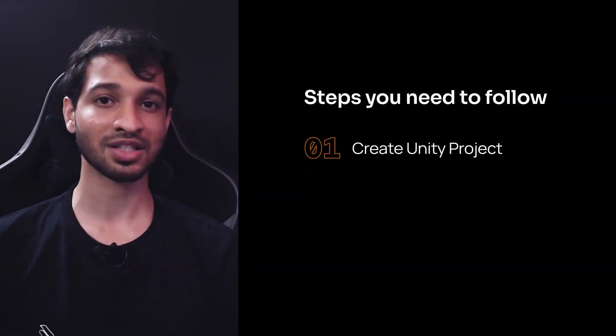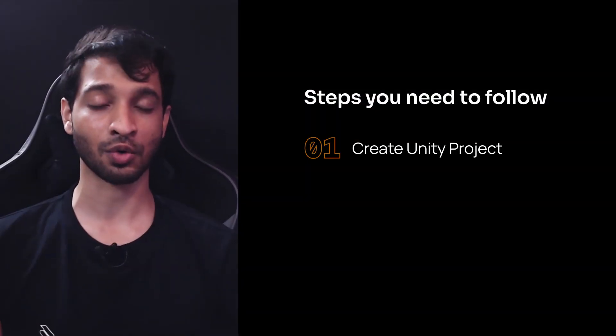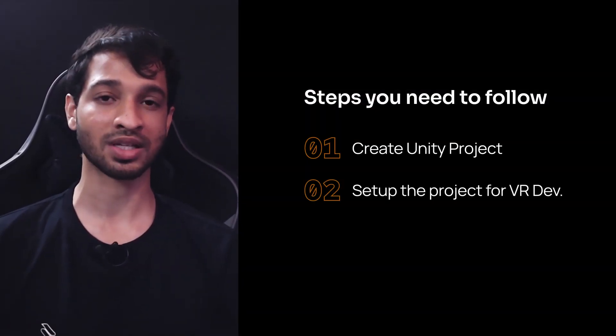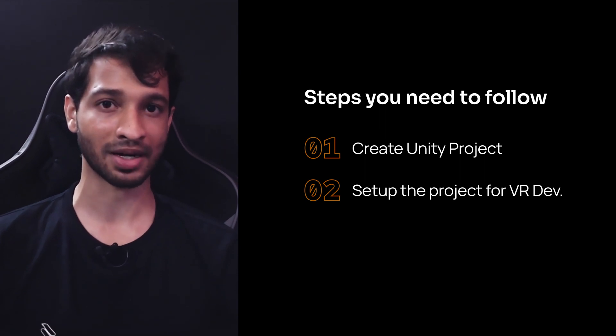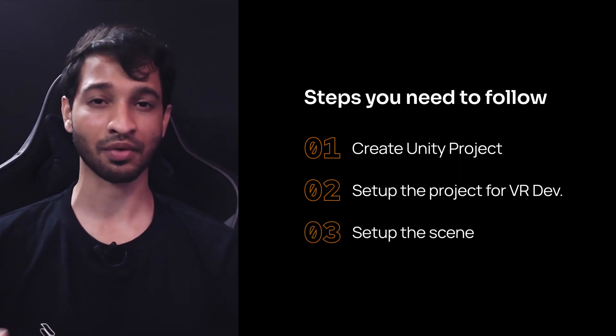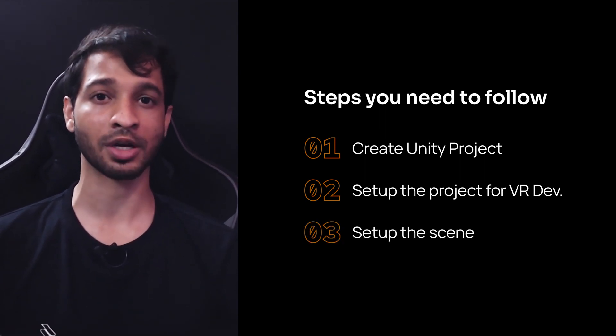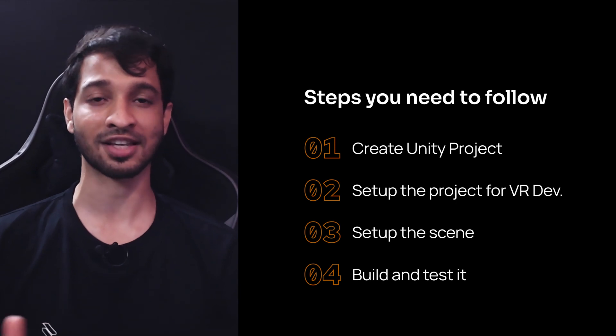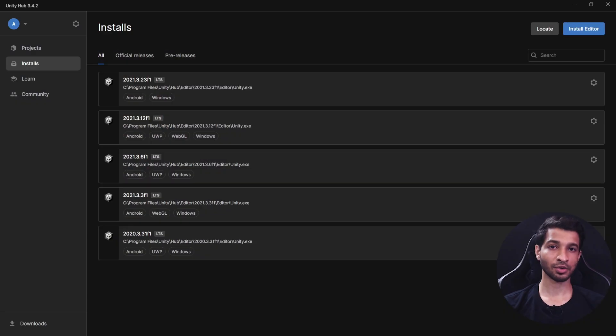In this video I'll show you how to set up your Unity project for hand tracking and passthrough. There are four steps that we'll have to follow: first is to create a Unity project and download all the packages, then we'll set up the project for VR development, next we'll set up the scene, and the final step would be to build it and test it on our headset.